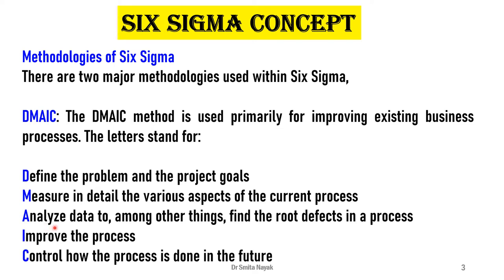The third step is to Analyze the process or data to find the root cause of defects. The root cause of variation and defect is established, and any issues with the current development strategy are identified. The fourth step, I, is Improve — improving the process by eliminating the determined root causes of defects using innovative solutions. Finally, C stands for Control — how the process is done in the future to avoid old habits and ensure the whole process stays on track.